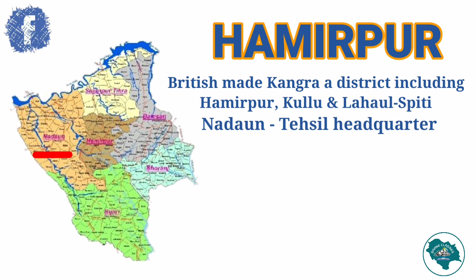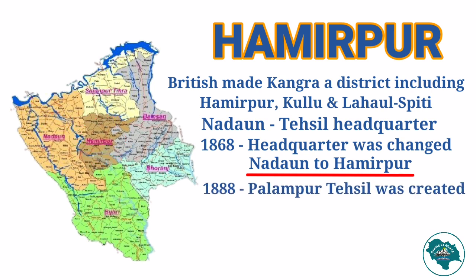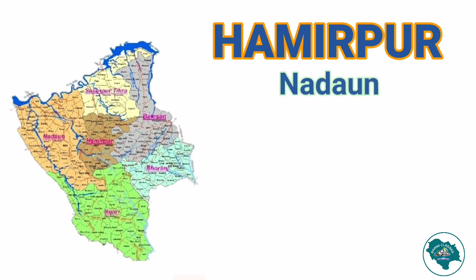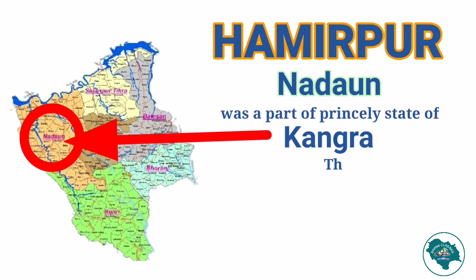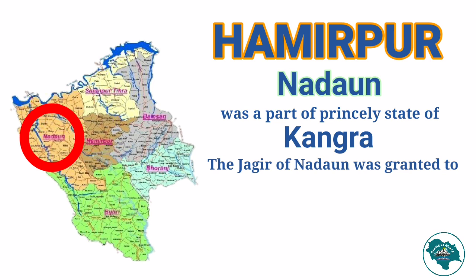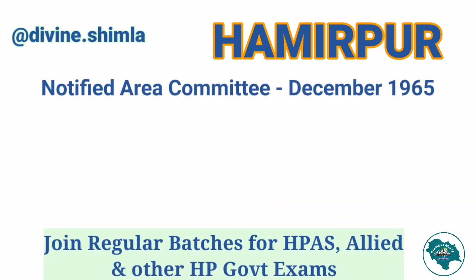Nadan was made the Tahsil headquarters. In 1868, the Tahsil headquarters was changed from Nadan to Hamirpur. In 1888, the Palampur Tahsil was created by merging parts of Hamirpur and Kangra district. At present, Nadan is part of Hamirpur, but earlier it was part of the princely state of Kangra. The jagir of Nadan was granted to Raja Sarp Jodhbir Chand, son of Raja Sansar Chand. Hamirpur was first made a notified area committee in December 1965, which later got converted into a full-fledged town.